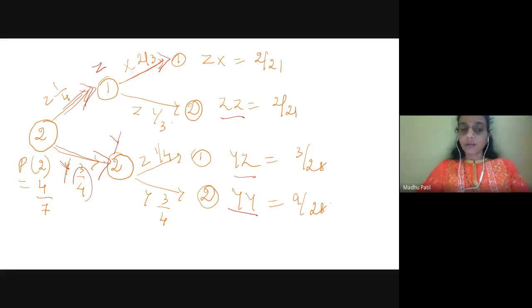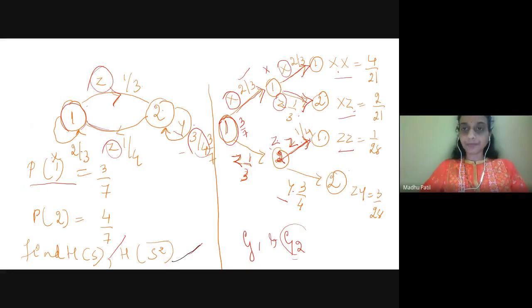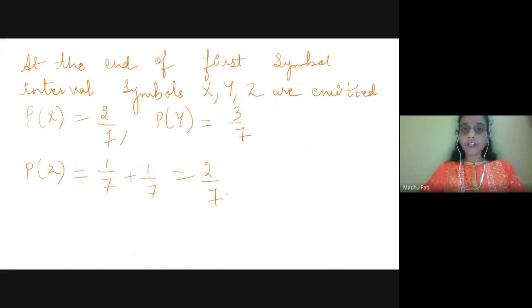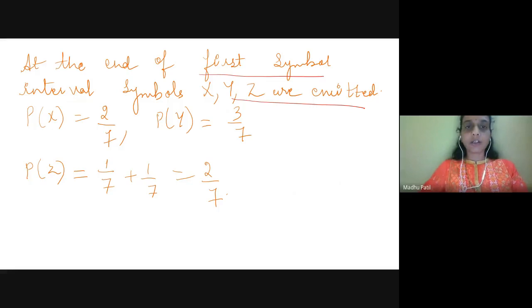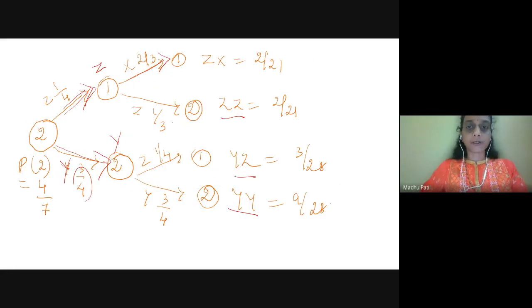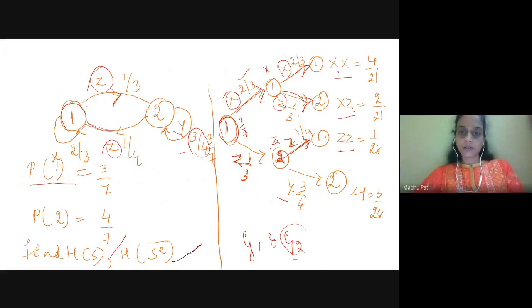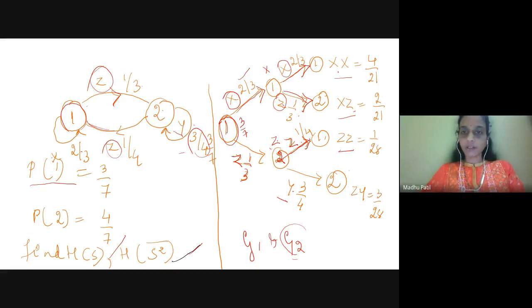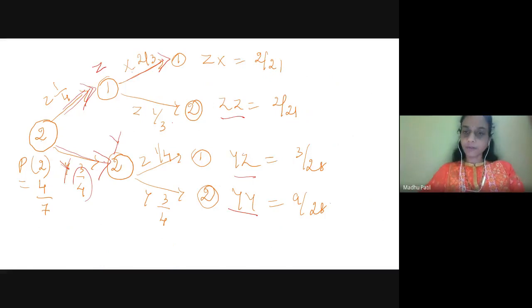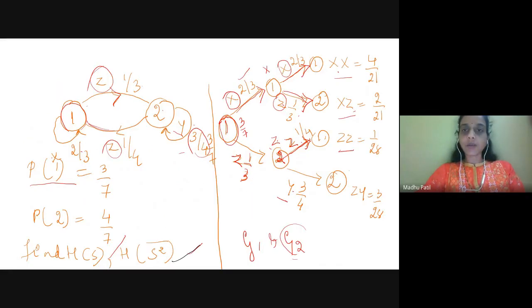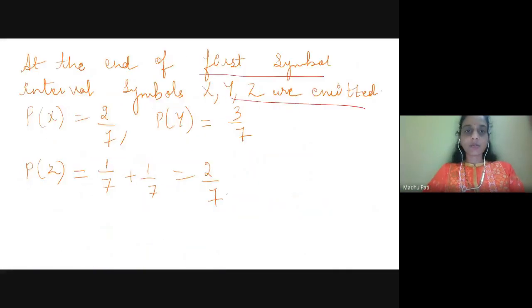For any given Markov source, we can draw the tree diagram. Now, p(x) equals 3/7 into 2/3, which is 6/21, which is 2/7. X is only emitted from state 1, so p(x) = 2/7.